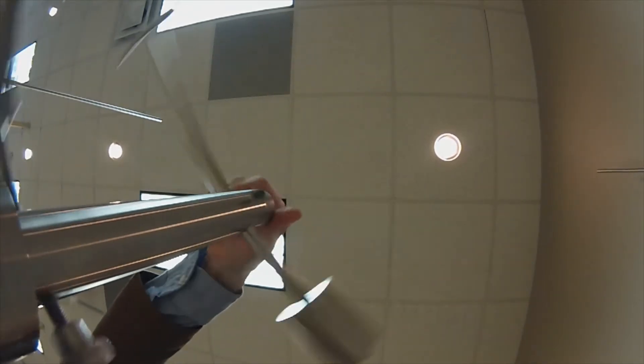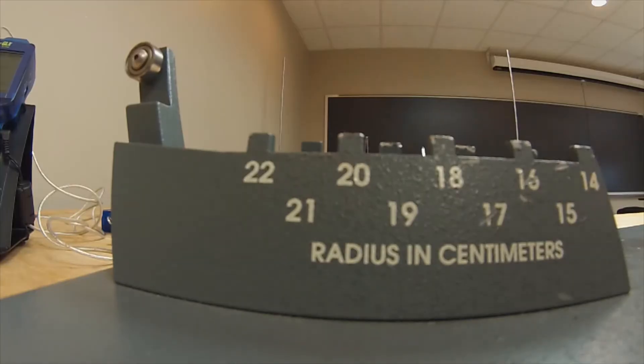Determining if the bob is passing over the correct radial marker can be a little tricky. Generally, positioning your head parallel with the measurement scale and sighting directly in line with the marker of interest can make this process a little easier. Just be careful not to get too close to the moving bob.